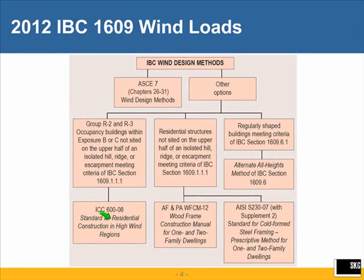There is an ICC standard 600, an AF&PA standard (American Forest and Paper Association), and an AISI standard. But those are not the subject today. The important choice for us today is that the 2012 IBC allows you, instead of going to ASCE 7, to design a regularly shaped building meeting criteria given in section 1609.6.1 using the alternate all heights method that is in the code itself. That is an important choice.